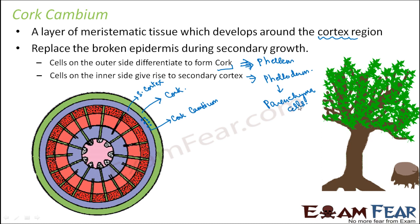Considering both vascular cambium and cork cambium, the thickness of the stem has increased greatly. Vascular cambium gave rise to secondary xylem on the inner side and secondary phloem on the outer side. Outside that, cork cambium came up which gave rise to secondary cortex on the inner side and cork on the outer side. So the thickness keeps on increasing. This cross section is what we call thickness.